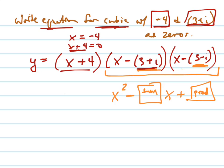So all I really have to do is find the sum of these two zeros, and that's easy. 3 plus i plus 3 minus i. The i's cancel, and you just get 6. So the sum is 6.